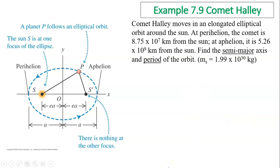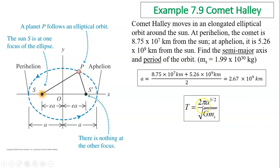Next example. Comet Halley moves in an elongated elliptical orbit around the sun. At perihelion, the comet is 8.75 times 10 to the 7 kilometers from the sun. At aphelion, it is 5.26 times 10 to the 9 kilometers from the sun. The question is what is the semi-major axis? If we know both distances, we can find the whole length. Semi-major is just half of that. Once we find the semi-major, we can use Kepler's third law to find the period. You will find it in seconds, but it's such a large number, so you can change that to years to make it more manageable.